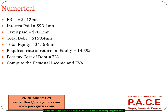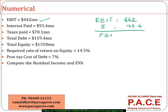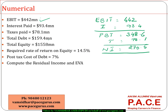Getting into a small numerical example: let's say EBIT is 442, interest is 93.4. So profit before tax is 348.6 million. Out of that, tax paid is 78.1 million, giving net income of 270.5 million — this is the accounting net income. Then total debt is 159.4 million, and equity follows from there for the subsequent computation.